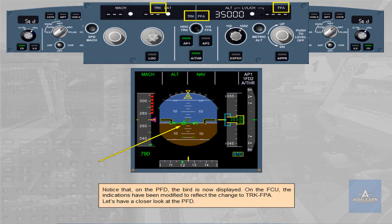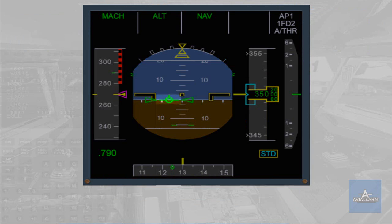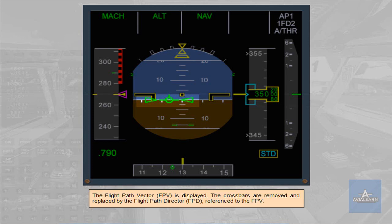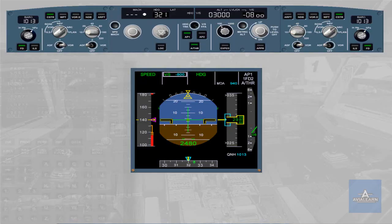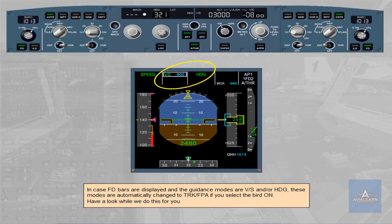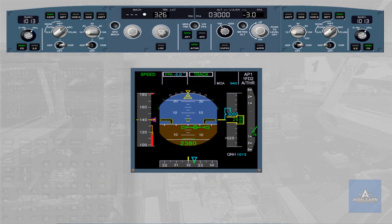Let's have a closer look at the PFD. The flight path vector (FPV) is displayed. The crossbars are removed and replaced by the flight path director (FPD), referenced to the flight path vector. In case flight director bars are displayed and the guidance modes are vertical speed and/or heading, these modes are automatically changed to track and flight path angle if you select the BIRD on. You can see that the mode changes are outlined on the FMA with white boxes. Notice also that the heading target has been changed to a properly synchronized track target.